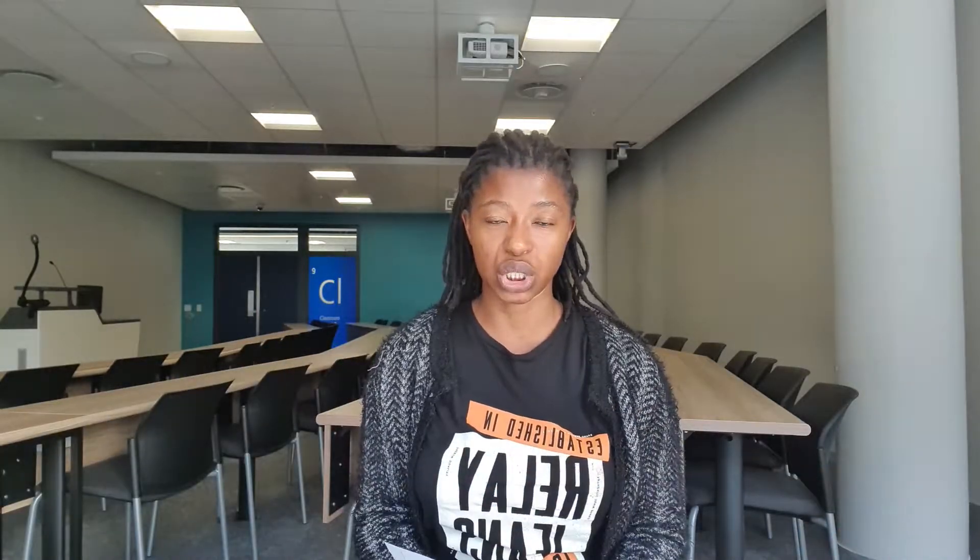Pharmacology is the study of how a drug works on the body, and how the body uses that drug, and the resulting side effects that occur because of this relationship. In pharmacology terms, this is known as pharmacodynamics and pharmacokinetics — these are very important terms that you need to know and understand.